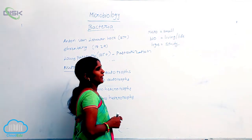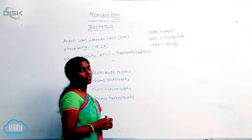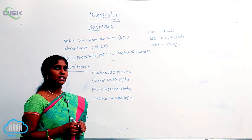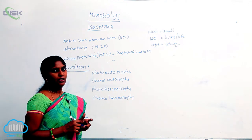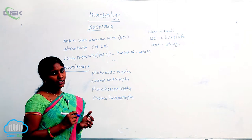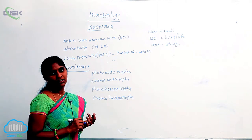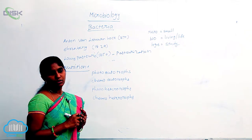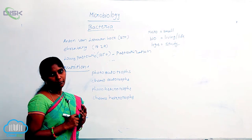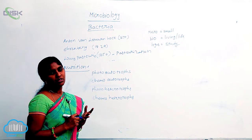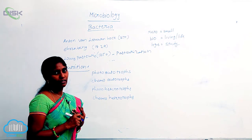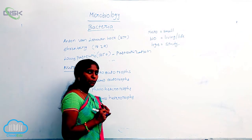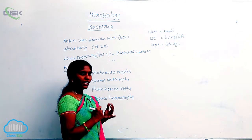Bacteria depend on two sources for their nutrition: a carbon source as well as an energy source. They need both an energy source and a carbon source, and according to their dependence on these two sources, they are classified.